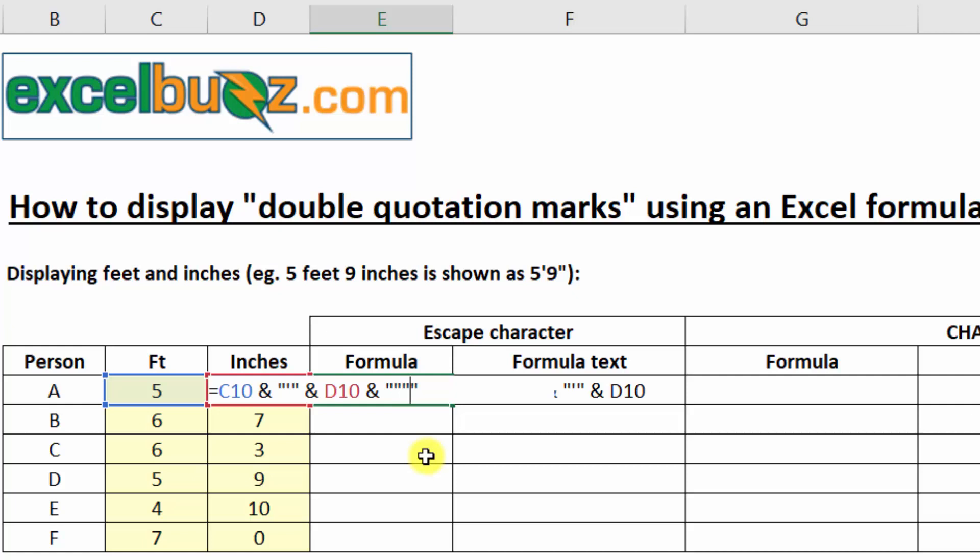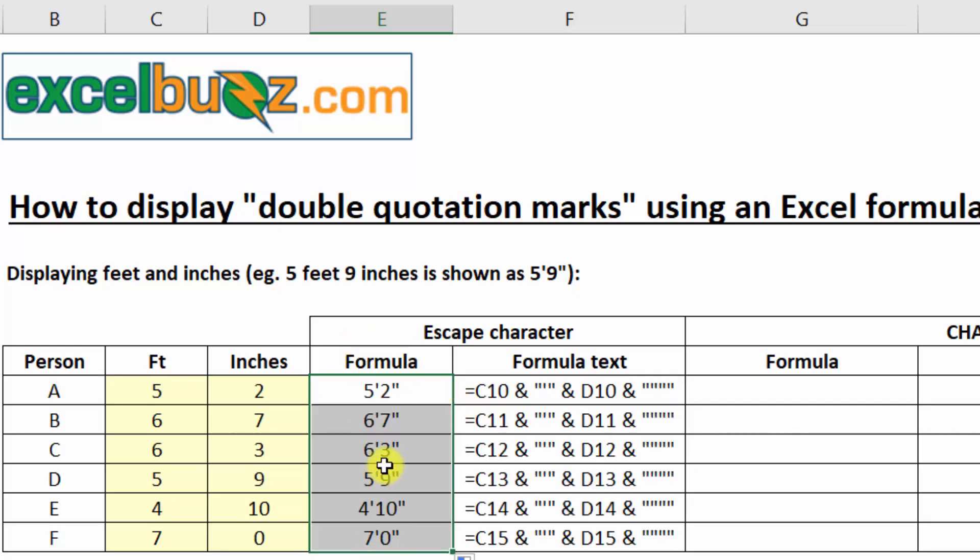So that's the third one. It's the one we're displaying. And then the fourth one is the one that closes the string of text. So let's see what happens. Enter. And there we go. So if I double click on the little square, we'll copy down. And we can see the formula works every time.